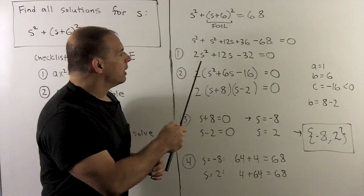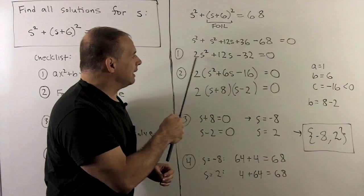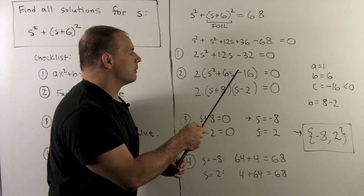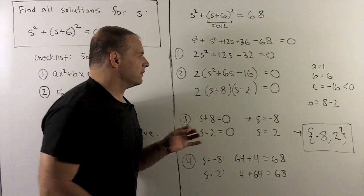For part two, I want to factor the left-hand side. I look for greatest common factor, which will be equal to two. So I could pull that out. That leaves S squared plus 6S minus 16. I need to use our factoring rules to make sense of this.